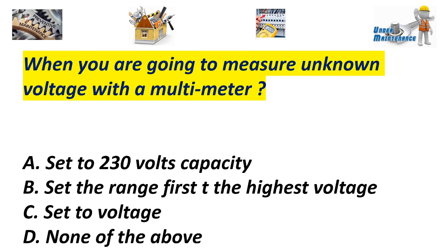When you are going to measure a non-voltage with a voltmeter. A. Set the 230 volts capacity. B. Set the range first to the highest voltage. C. Set the voltage. D. None of the above. Answer B. Set the range first to the highest voltage.